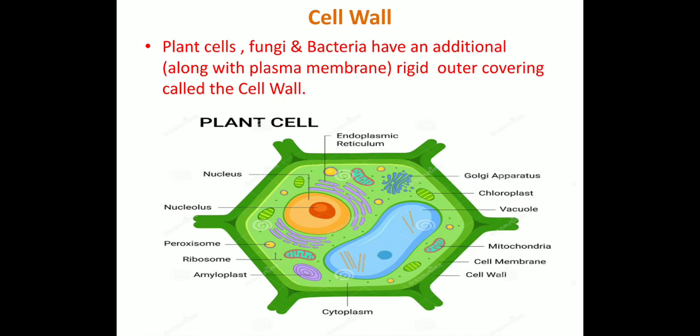Cell wall is absent in animal cells. Please write it down that cell wall is absent in animal cells and it is found only in plant cells, fungi, and bacteria. Along with plasmolysis, this is the outermost covering of the cell. In the structure given below, by enlarging the screen, you can easily see that there is a cell membrane, and just after that there is the cell wall. This type of structure is absent in animal cells.